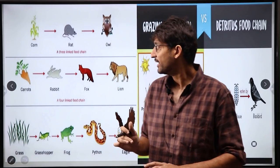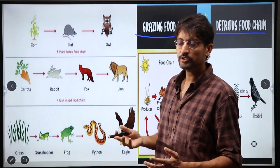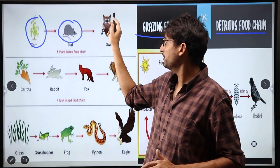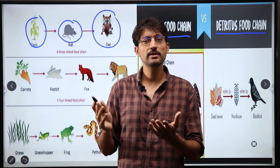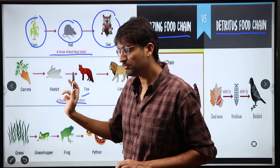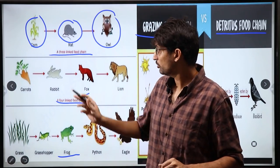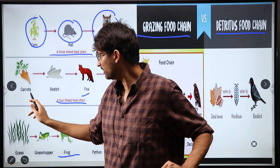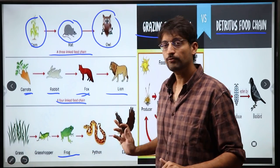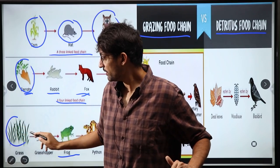Food chains are of two types: one is the grazing food chain and one is the detritus food chain. The grazing food chain is the basic food chain, which starts with plants, then herbivorous animals eat the plants, and herbivorous animals are eaten by omnivorous or carnivorous animals. This can be a three-linked, four, or five species food chain. For example, a grazing food chain: carrot → rabbit → fox. The grazing food chain always starts with producers and ends with the final consumer.